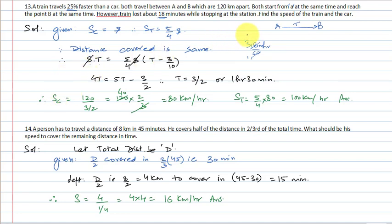Speed of car equals distance upon time = 120 km divided by 3/2 hours = 80 km per hour. Speed of train is 5/4 of s = 5/4 of 80 = 100 km per hour. This is an important question.